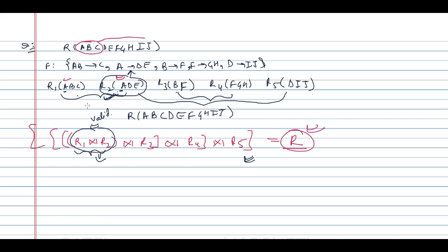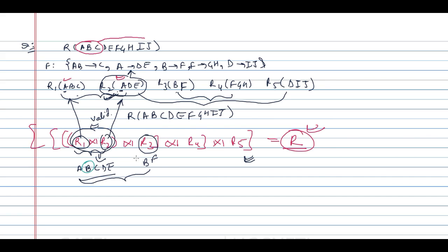After joining R1 and R2 we get the attributes A, B, C, D, E. R1 is A, B, C and R2 is A, D, E. Now joining with R3(B, F): B is the common attribute. From the functional dependency B determines F, B is a key attribute in R3, therefore this decomposition is also lossless.